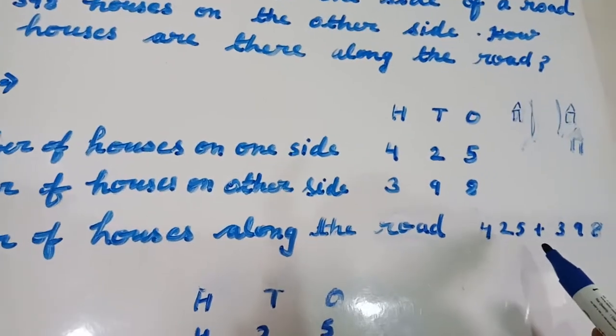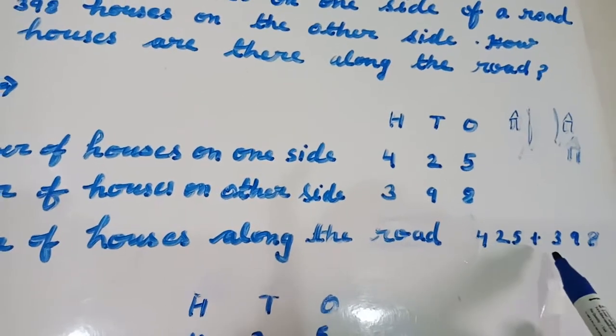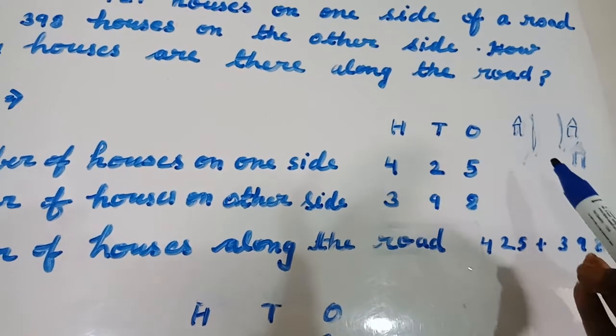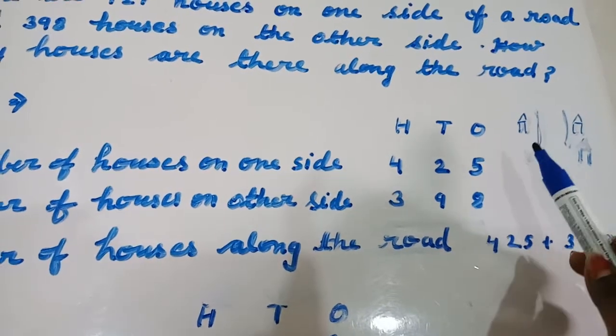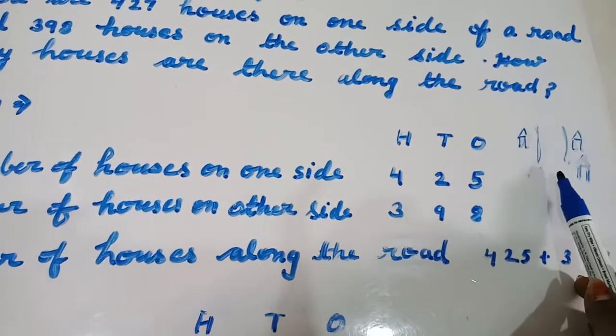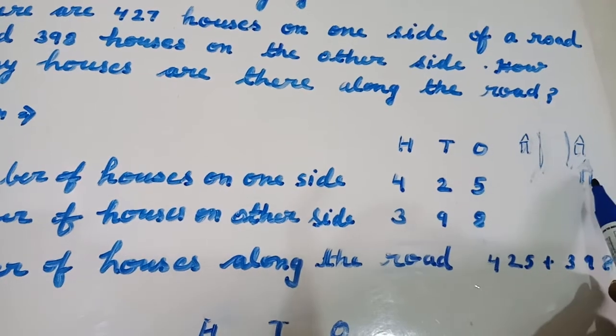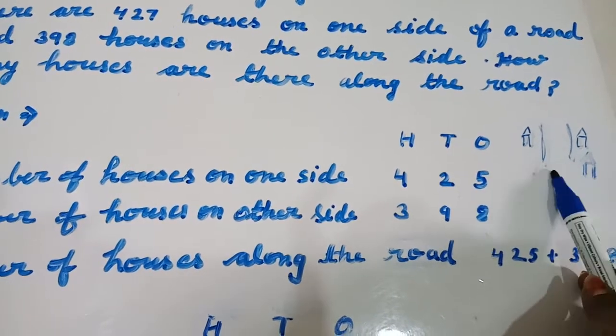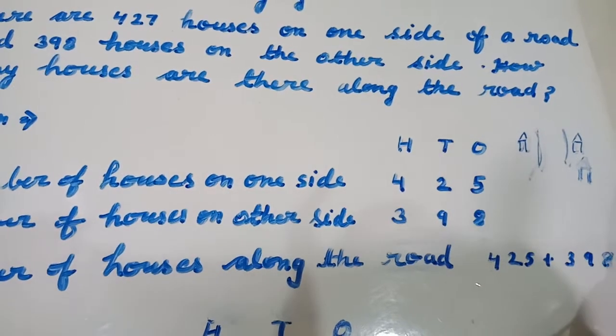425 plus 398. Why we put here plus sign? Because we have to find number of houses along the road. यानि कि इस road के साथ में जितने houses हैं, हमें इस तरफ और दुस्री तरफ दोनों के houses को प्लस करना पड़ेगा.